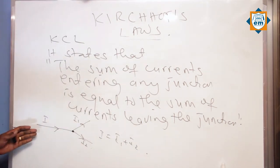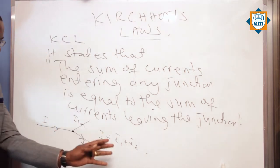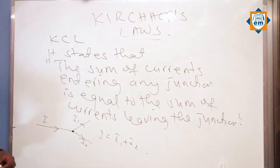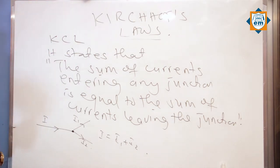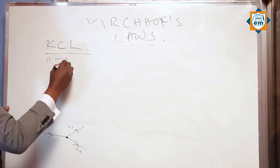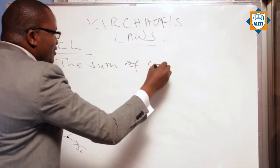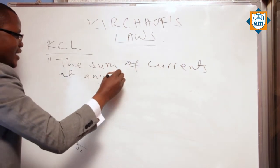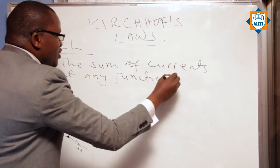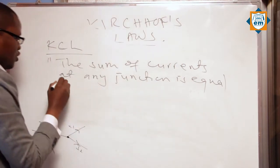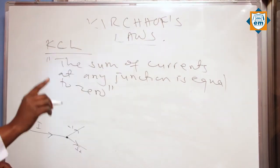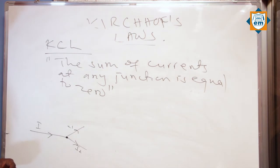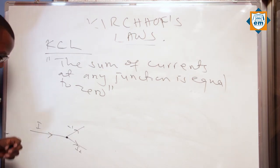The sum of current at any junction is equal to zero.